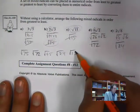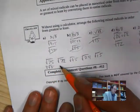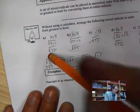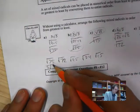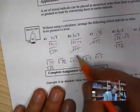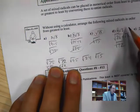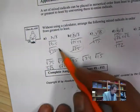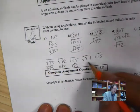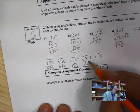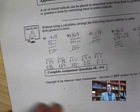Comparing the values: root 75 is the biggest, then root 72, root 45, root 24, then root 15. So the order from greatest to least is: 5 root 3, 6 root 2, 3 root 5, 2 root 6, root 15.